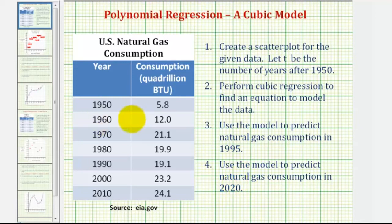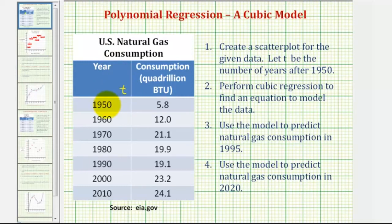Before we make our scatterplot, it's important to recognize that T is the number of years after 1950, so we're not going to use the raw year values as X values — in this case they're actually T values. So for 1950 we'll use T equals zero, for 1960 we'll use T equals ten since 1960 is ten years after 1950, for 1970 we'll use twenty, and so on.